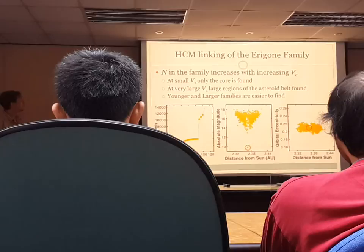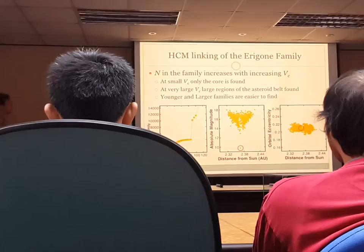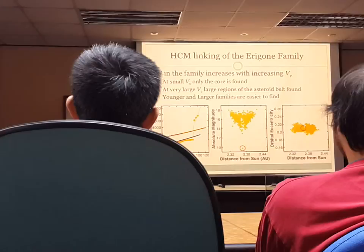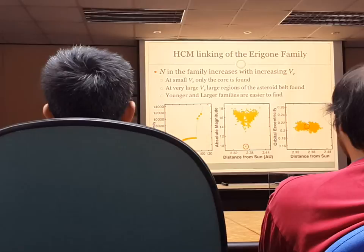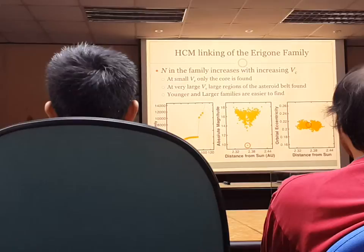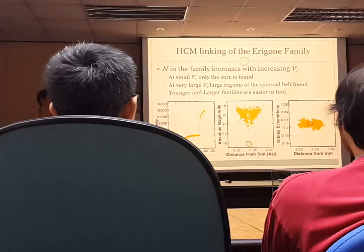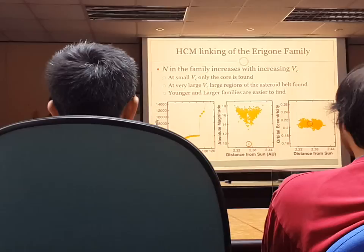This tool is a bit of a blunt tool and there are a number of ways for it to fail. If your family is very, very old, it will have spread out very far in semi-major axis, and you'll need a very big velocity criterion to find it. But if your velocity criterion gets too big, you find simply the entire asteroid belt. Your family can grow so old and diffuse that it's almost indistinguishable from the background, or there are enough interlopers that your linking routine gets distracted and links a different family or an entire region of the belt.